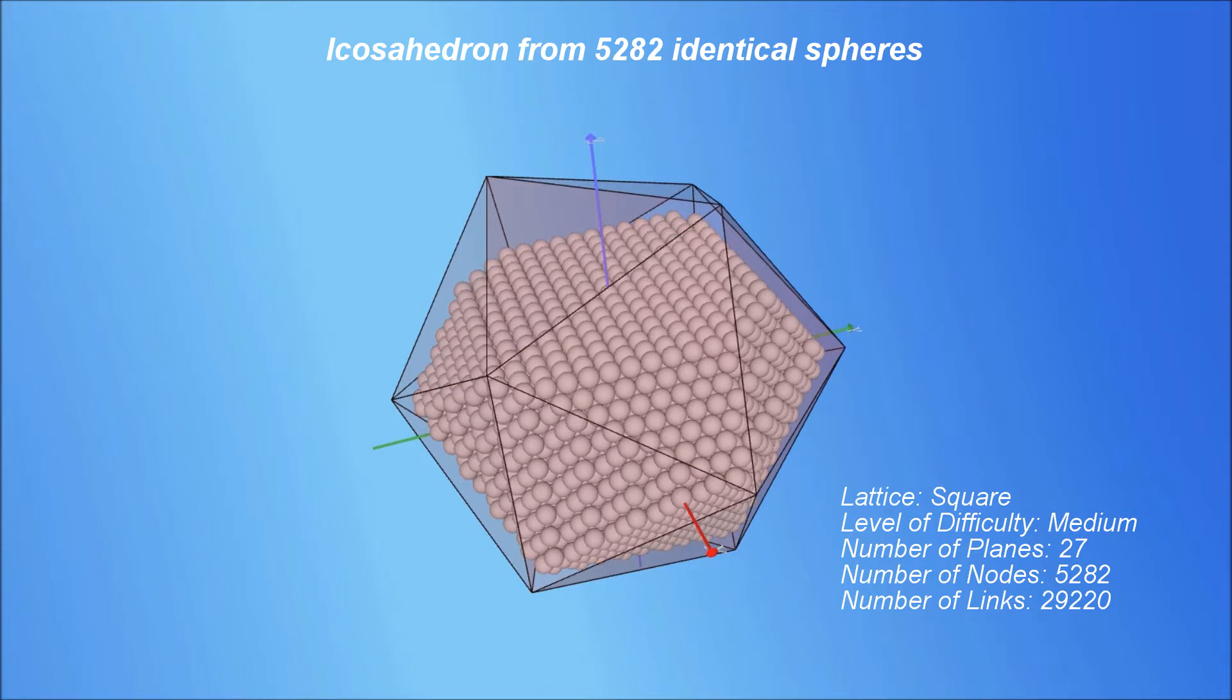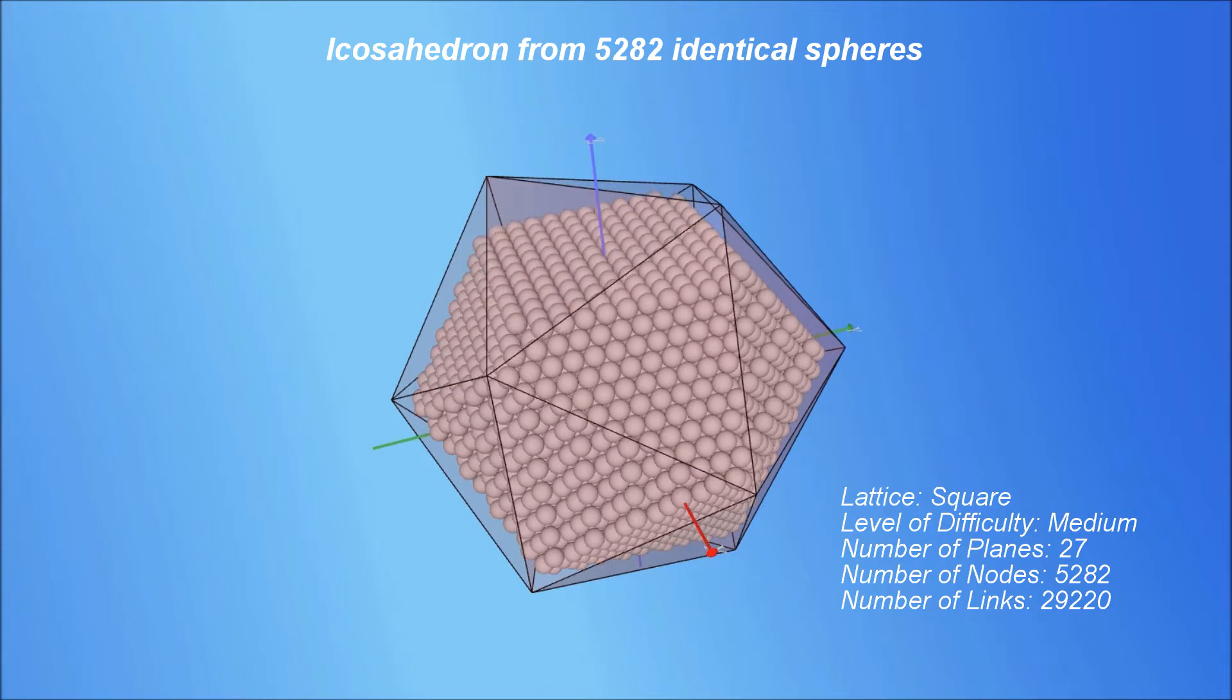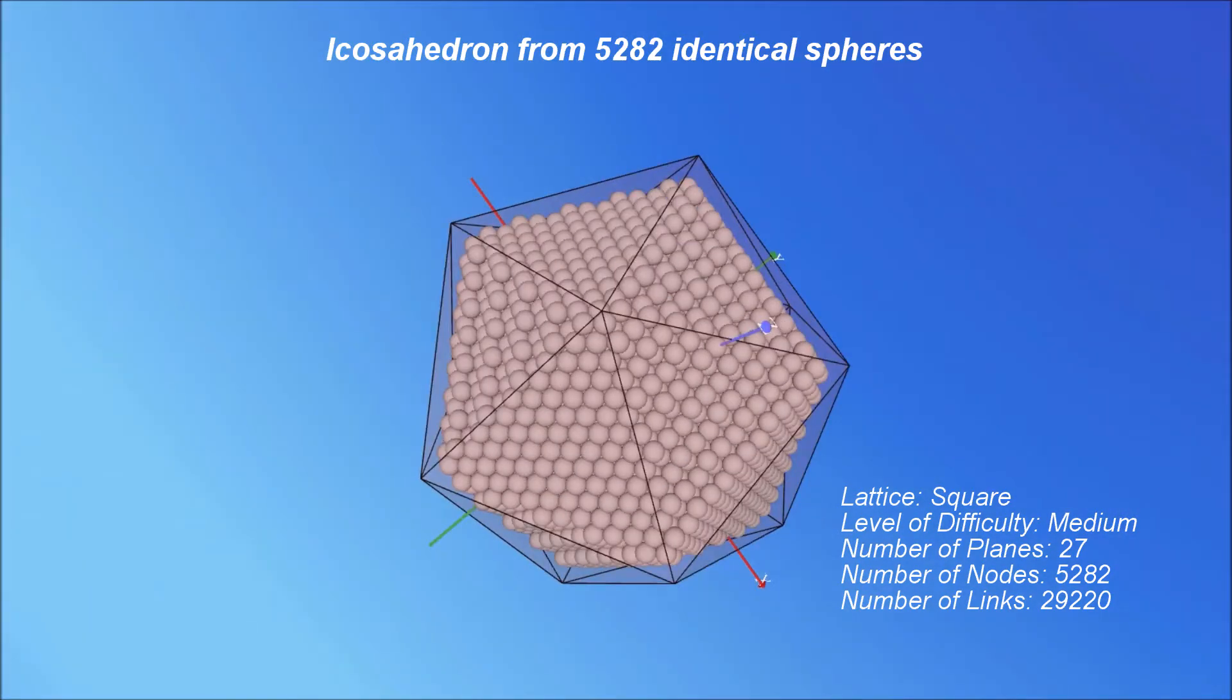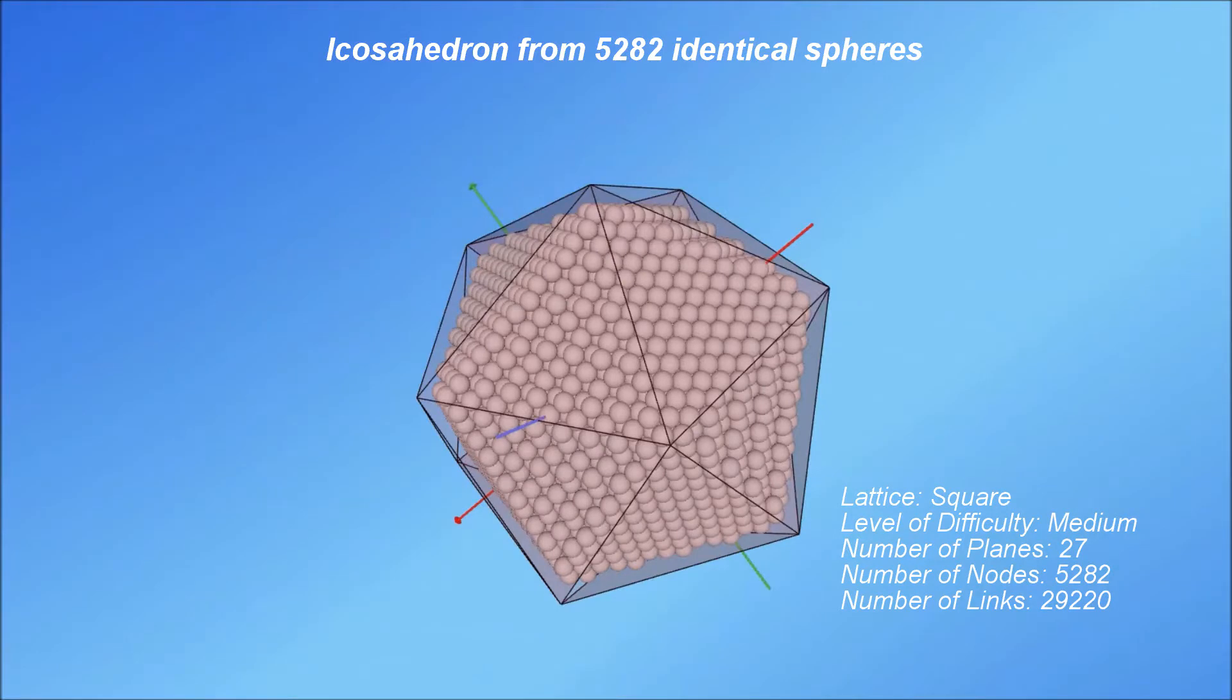To start to understand this pattern, we will use four icosahedrons that can be assembled using larger and larger numbers of spheres. Only the shell of the icosahedron will be shown. We want to make sure the necessary details of the icosahedron's structure are clearly seen.